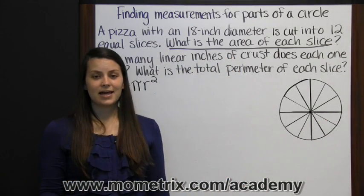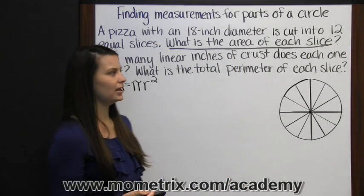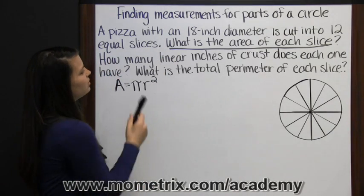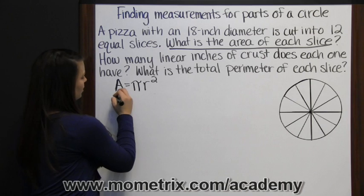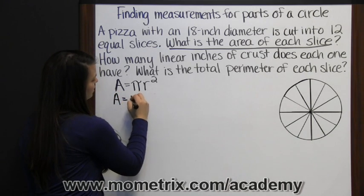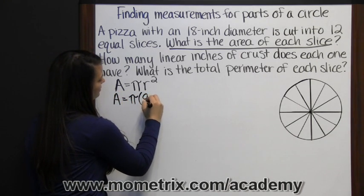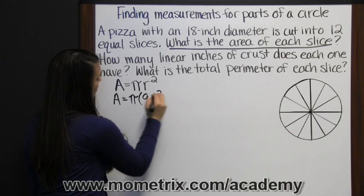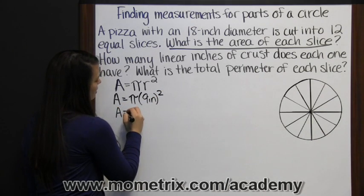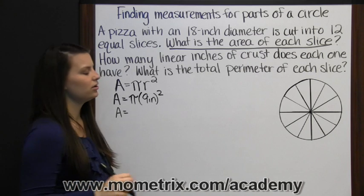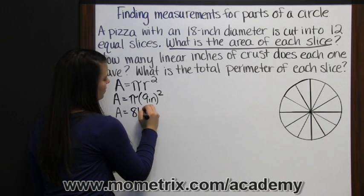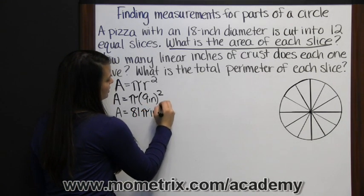The radius then is half the diameter. So if the diameter is 18 inches, then the radius is 9 inches. So we substitute 9 inches for radius. Pi times 9 inches squared. So the area is 9 inches squared is 81 inches squared times pi is 81 pi inches squared.